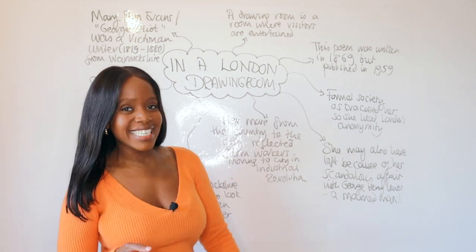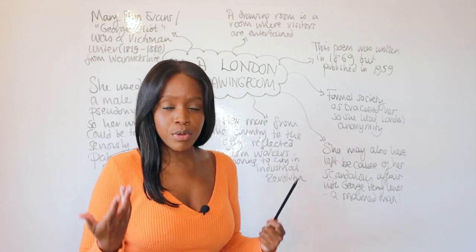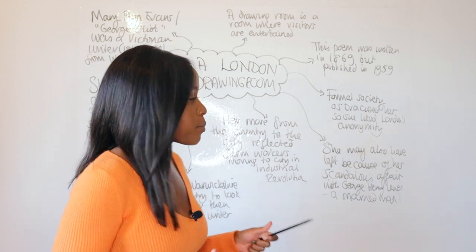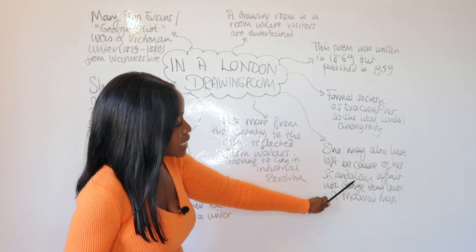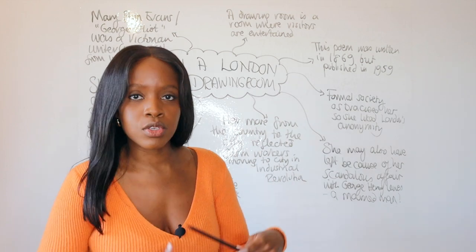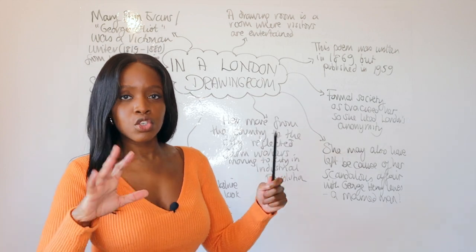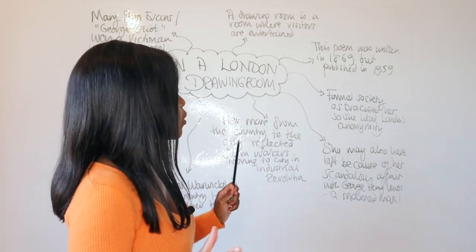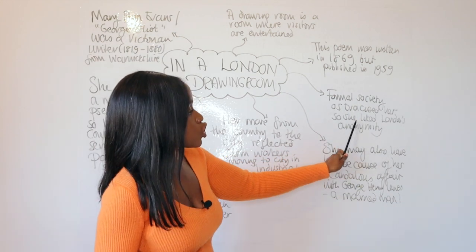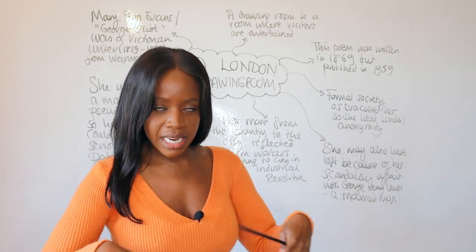A more scandalous reason that George Eliot may have left her home in rural Warwickshire — which also highlights her independence as a woman a little bit ahead of her time — is her scandalous affair with a married man called George Henry Lewes. It was very scandalous, and arguably she also left for London because she wanted to escape the terrible reputation she had gathered as formal society basically excluded and ostracized her. She probably wanted to move to London to be more anonymous and wipe the slate clean in terms of her reputation.